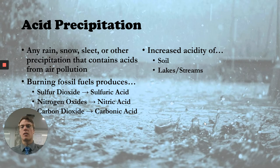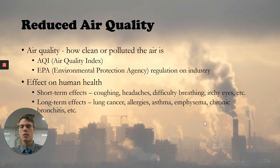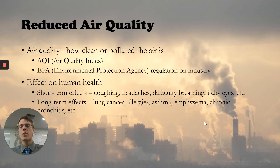If the soil is too acidic, plants can't grow and animals can't live there, so it creates a lot of problems. That's an important reason why we need to prevent air pollution — because of acid precipitation. Another reason is air quality in general. Air quality is essentially how clean or polluted the air is, and it can be measured by the AQI, the Air Quality Index. Different places like China are going to have worse scores.